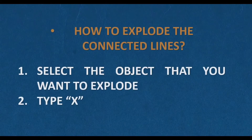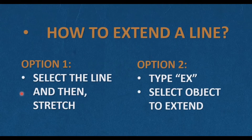Mirror. How to mirror an object: First, select the object. Second, type MI. Third, select the first point of the mirror line, then select the second point of the mirror line. You will be asked the question: Erase the source object? Yes or no.